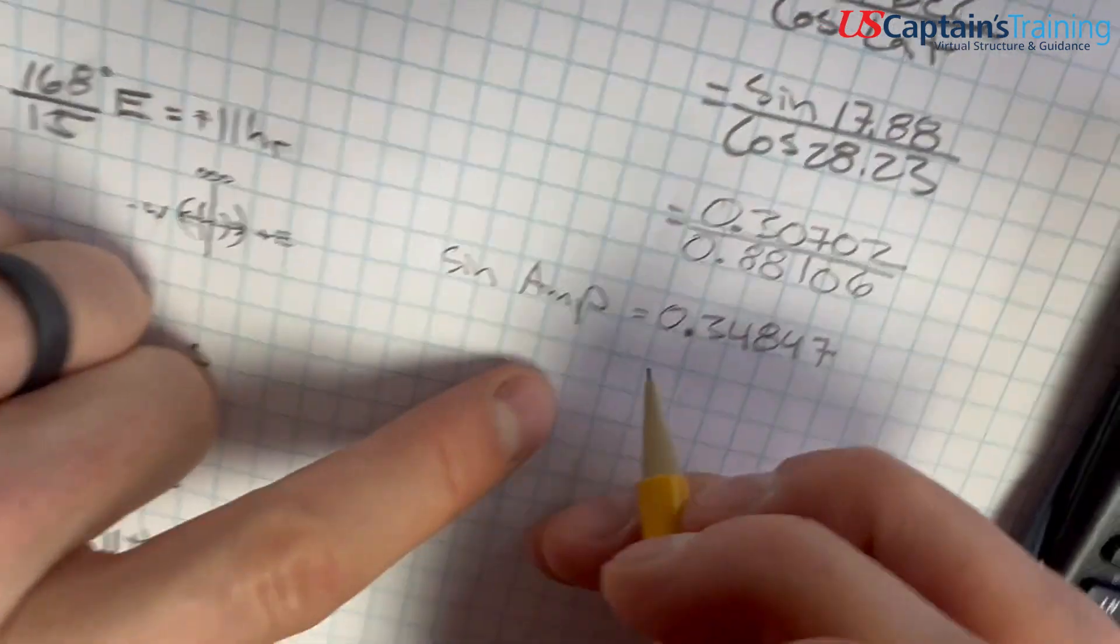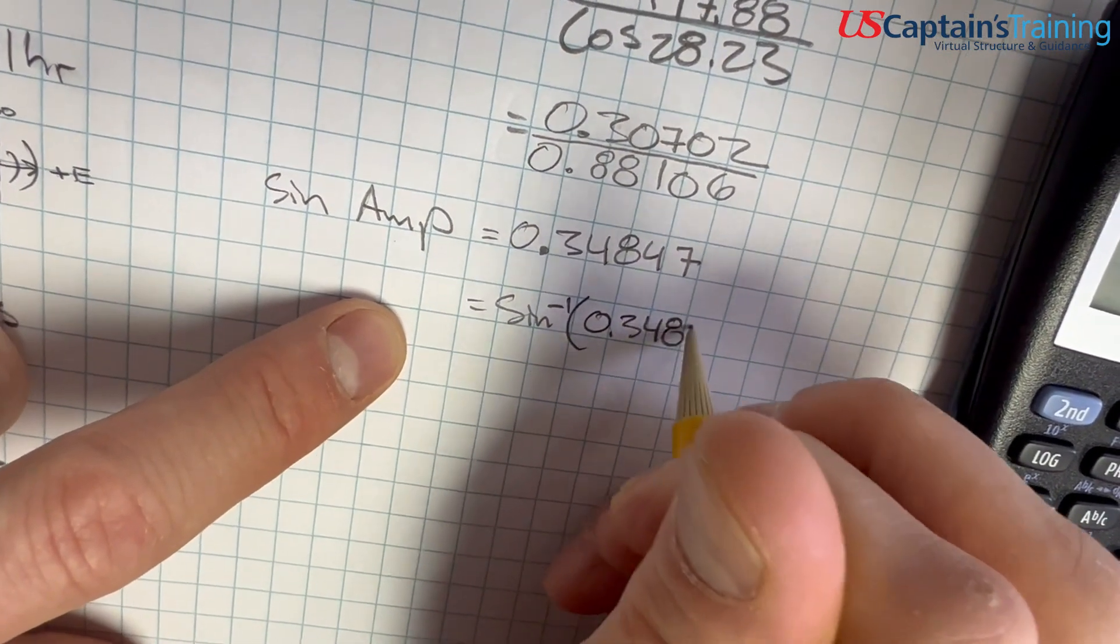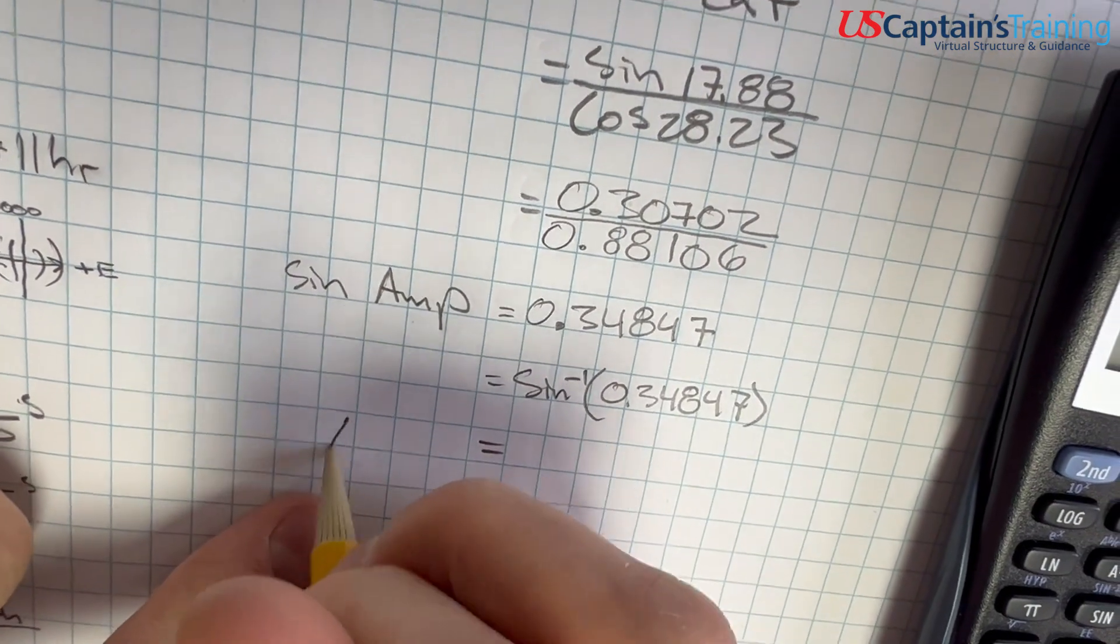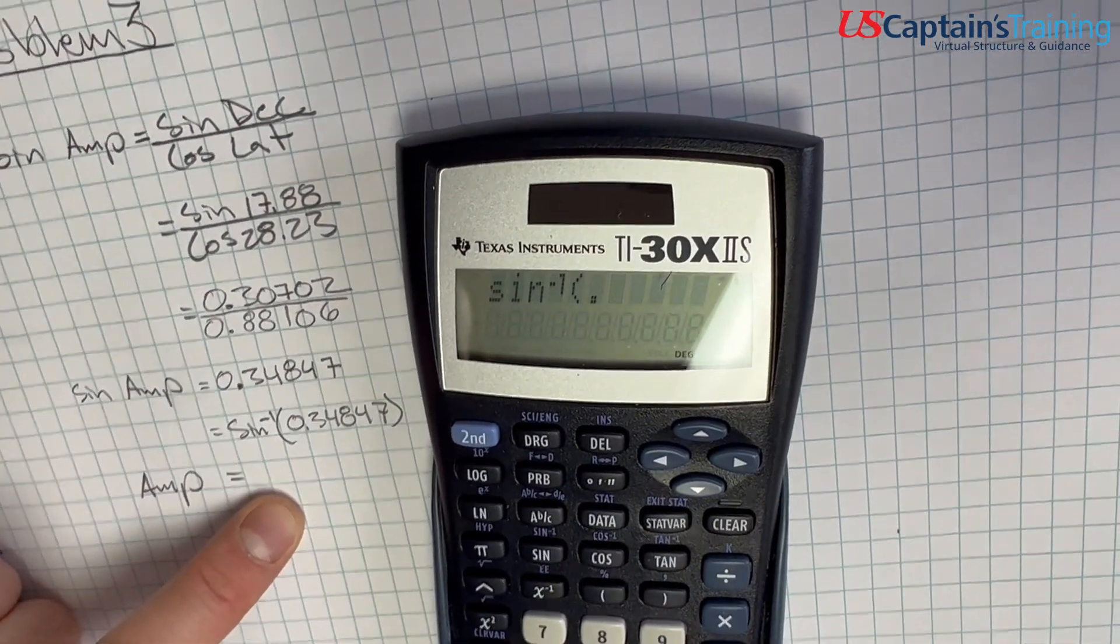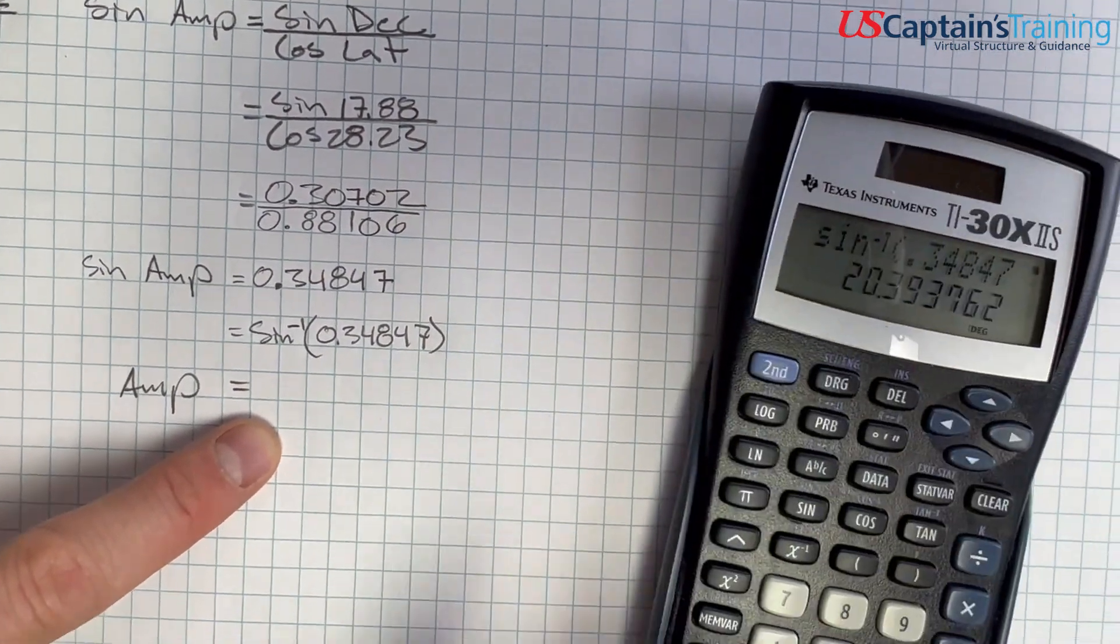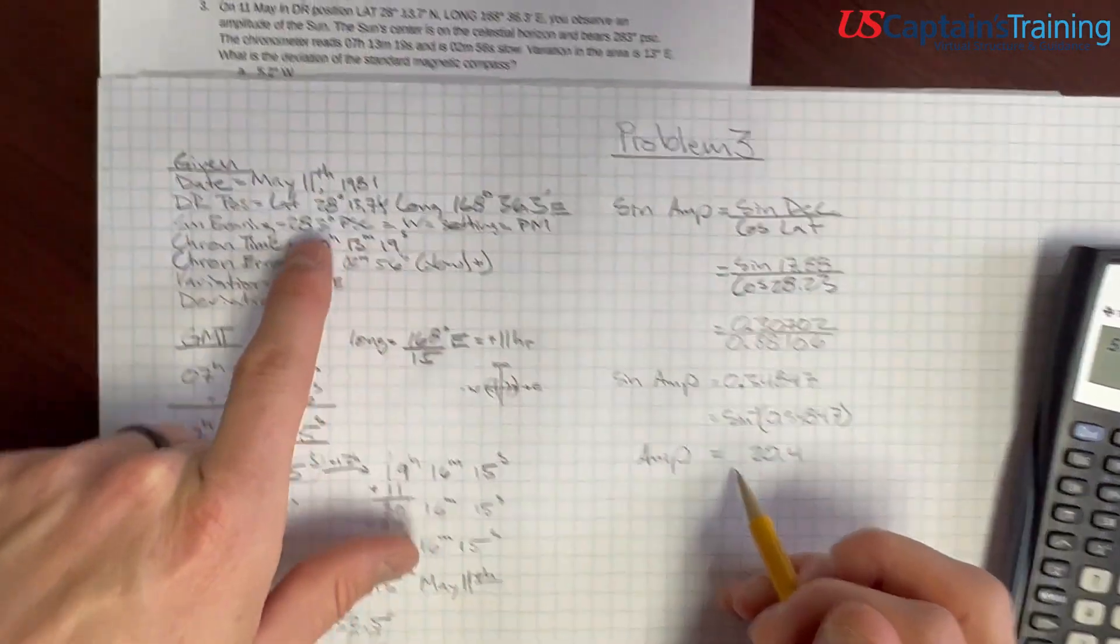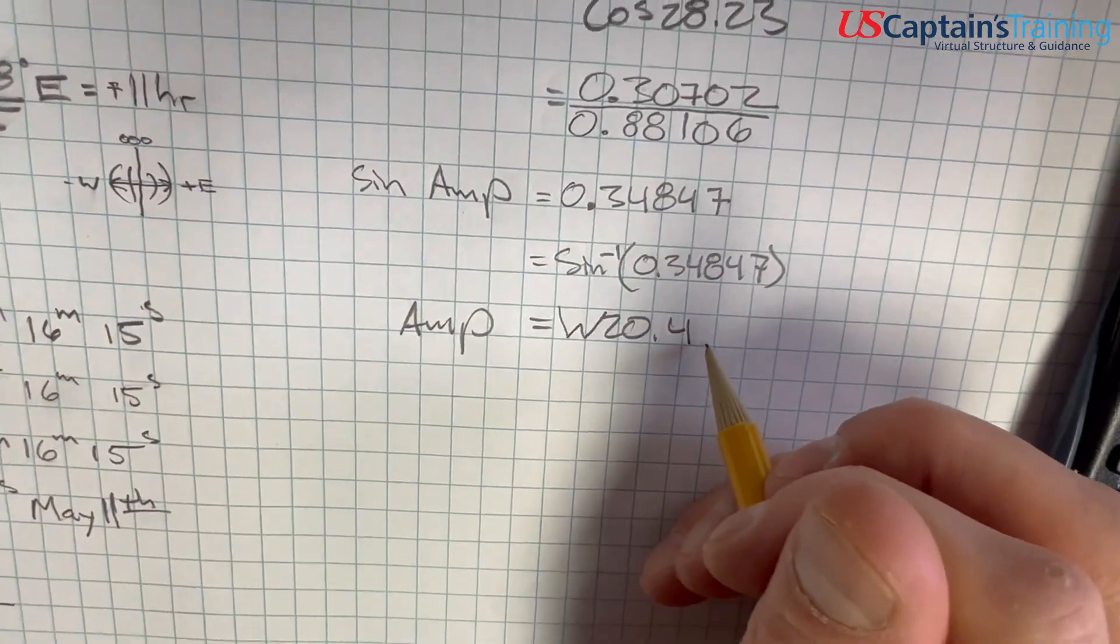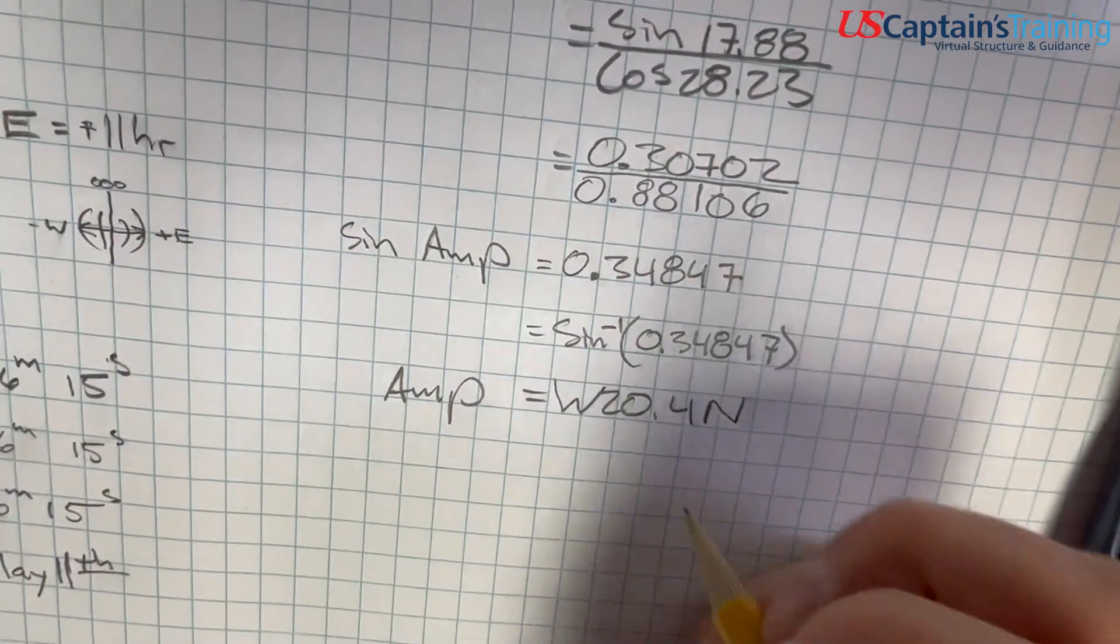We need to get amplitude, so we take the inverse sine. Sine inverse of 0.34847 equals 20.4 degrees, and it's going to come out in quadrantal notation. We need to name this thing. Up in front, we're going to name it east or west. We saw the sun bearing 283, which means it was in the west. And north or south is determined by declination. Declination is north.